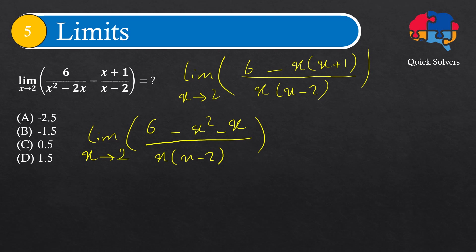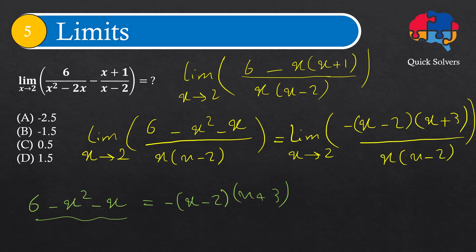And one other thing that I can do is that I can write this 6 minus x squared minus x as minus x minus 2 times x plus 3. I didn't write it very nice, but yeah, now it's better. So if I do so, then we have the limit of minus x minus 2 times x plus 3 over x times x minus 2. And x approaches to 2.